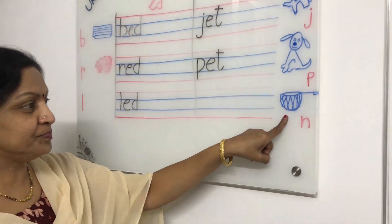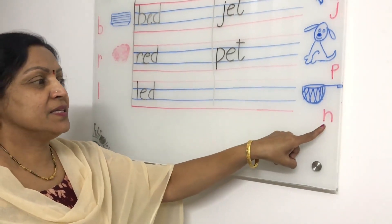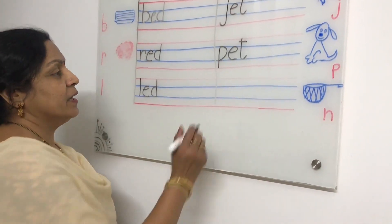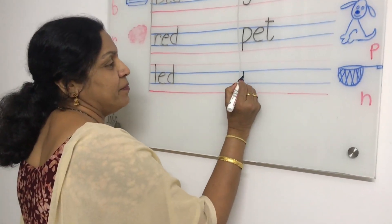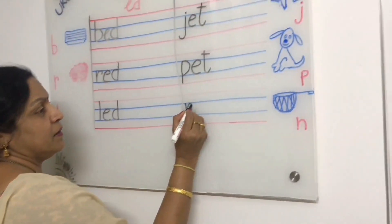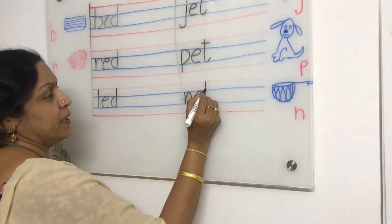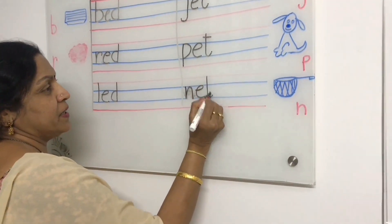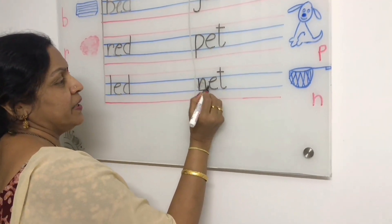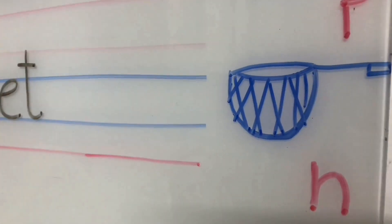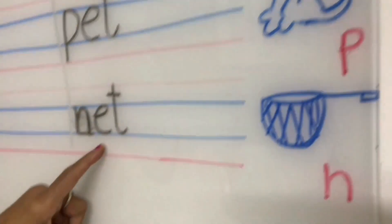What is this? This is NET. This letter is N. When you join this N letter to ET it will become NET. N... E... T... NET. N-E-T, NET. J-E-T, JET. PET. NET.